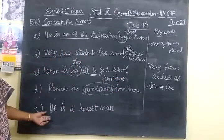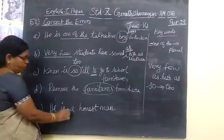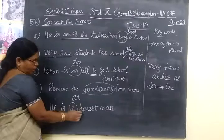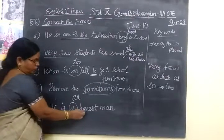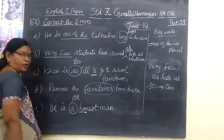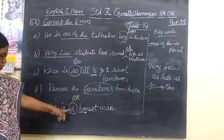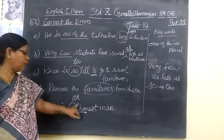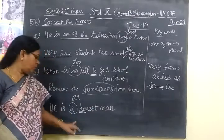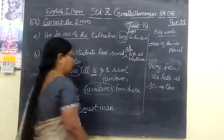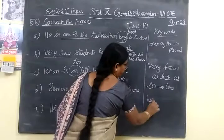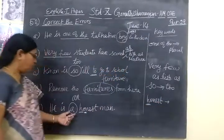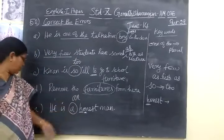Last one: 'He is a honest man.' Instead of 'a,' you have to write 'an' because 'H' is silent in 'honest.' So you give importance to the vowel sound — A, E, I, O, U — word form. You are using 'He is an honest man.' The keyword is that 'H' is silent, so you write 'an.'